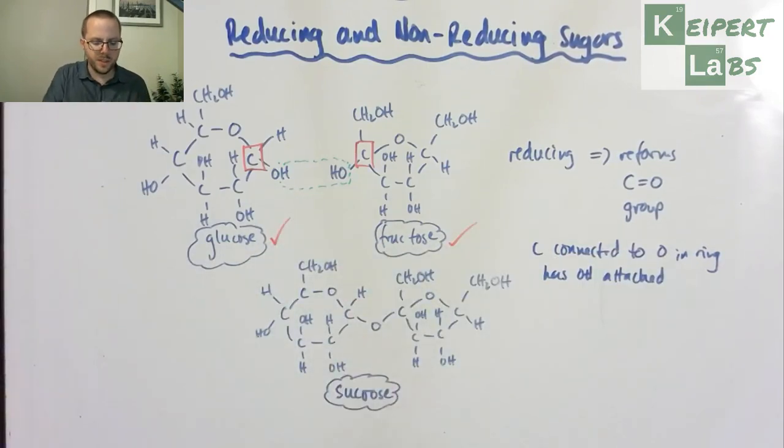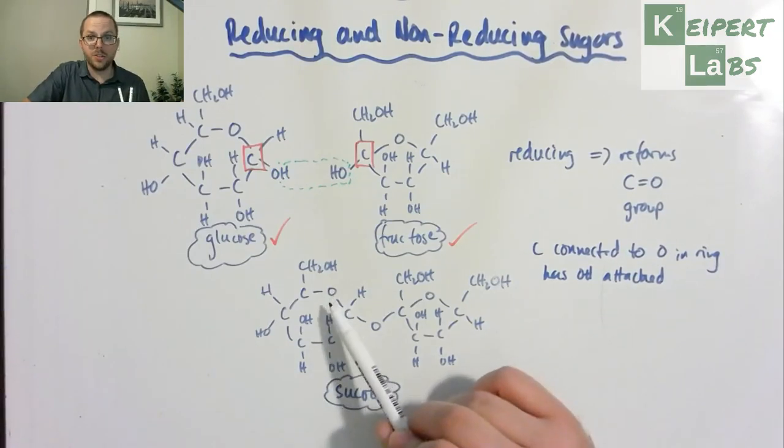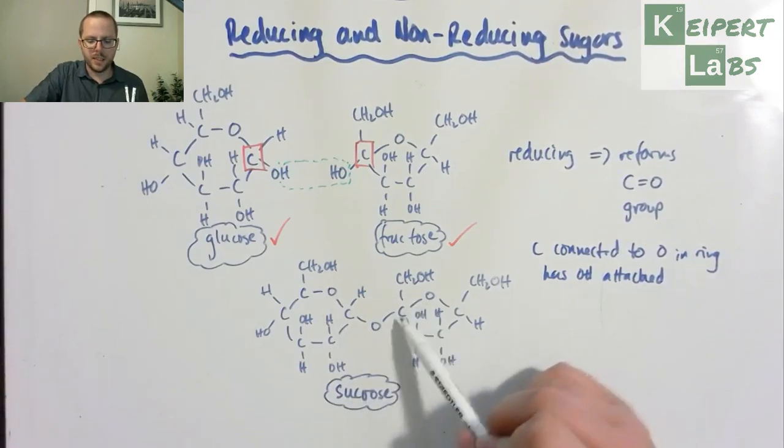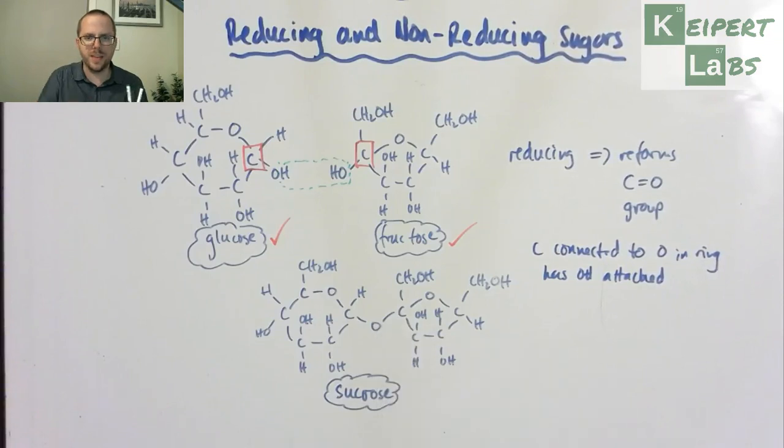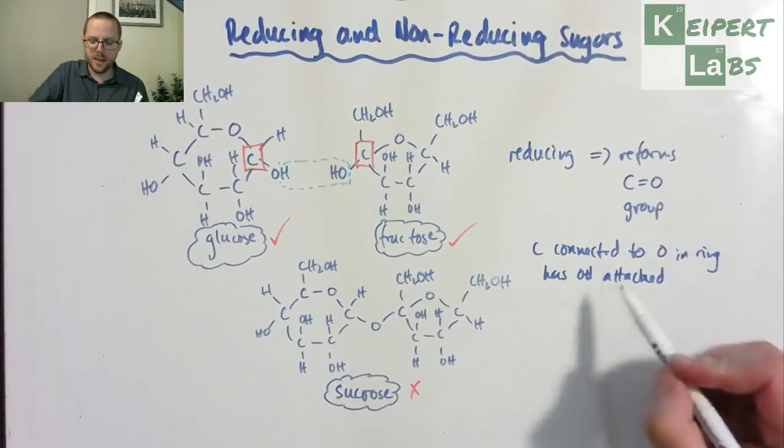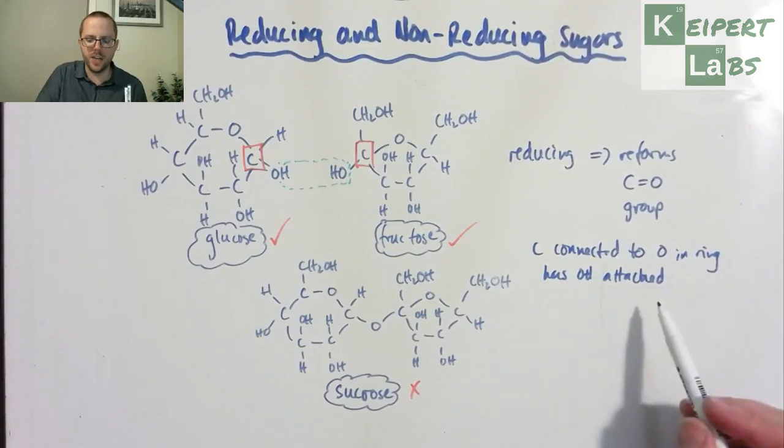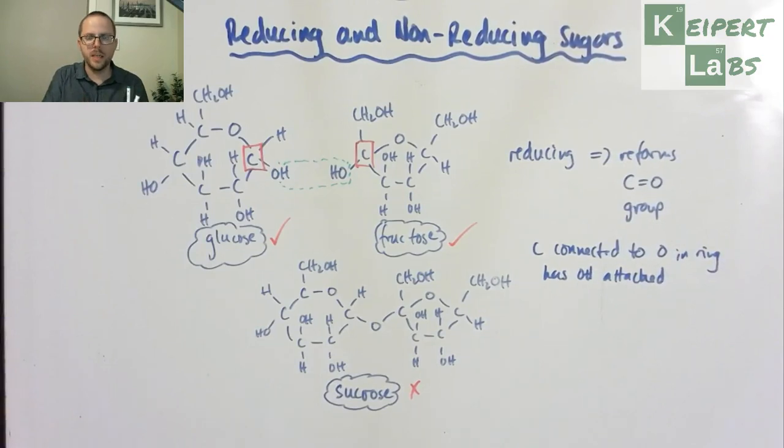However, what we notice is that if we look at the same carbons in sucrose, here, this carbon is connected to the oxygen in the ring, but this oxygen isn't an OH group. This is the carbon connected to the oxygen in the ring, but also doesn't have an OH group. So it can't open up like it used to when it was monosaccharides. So that means that sucrose is a non-reducing sugar. Because it doesn't have this carbon connected to the oxygen with an OH attached, therefore it can't reform our carbonyl group and it can't be reducing.